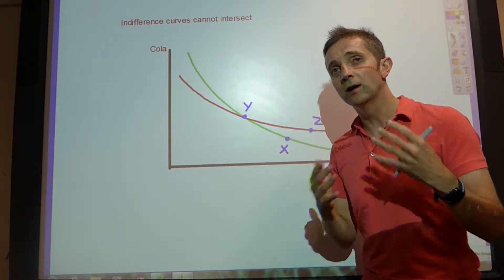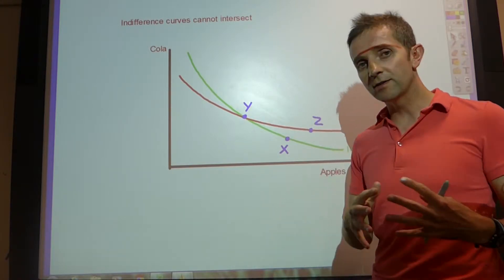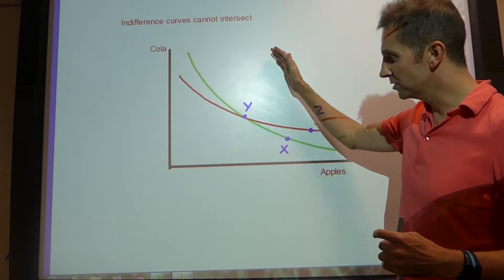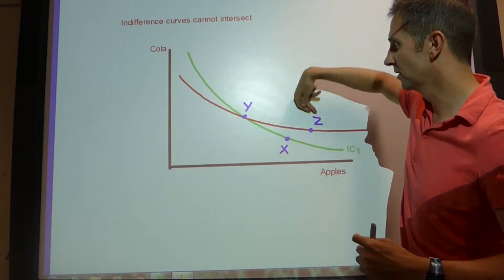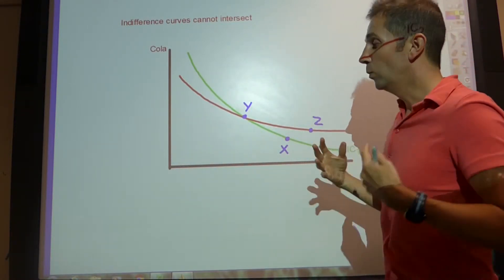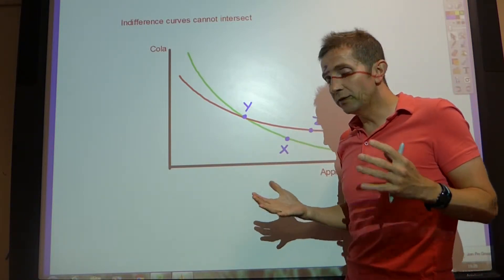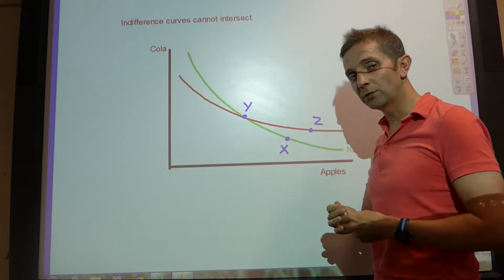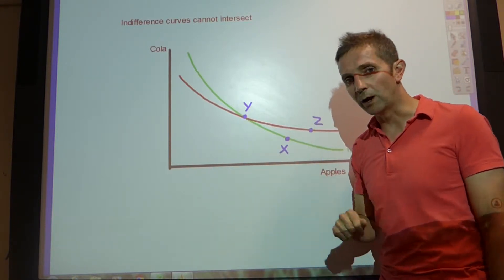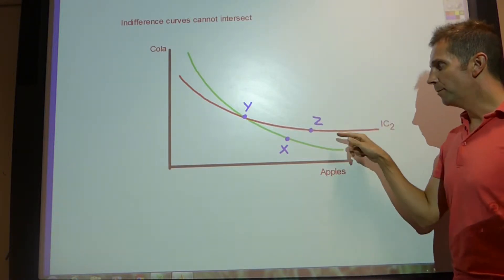Why is that? Well, we assume that consumers prefer more to less — they enjoy consuming more goods and services rather than less. And so as we move outwards from the origin, the indifference curves that would be drawn would show an increasing level of consumer utility or an increasing level of consumer satisfaction.